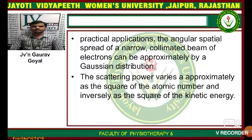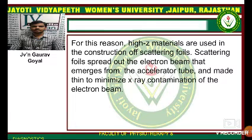In practical applications, the angular and spatial spread of a narrow collimated beam of electrons can be approximated by a Gaussian distribution. The scattering power varies approximately as the square of the atomic number and inversely as the square of the kinetic energy.